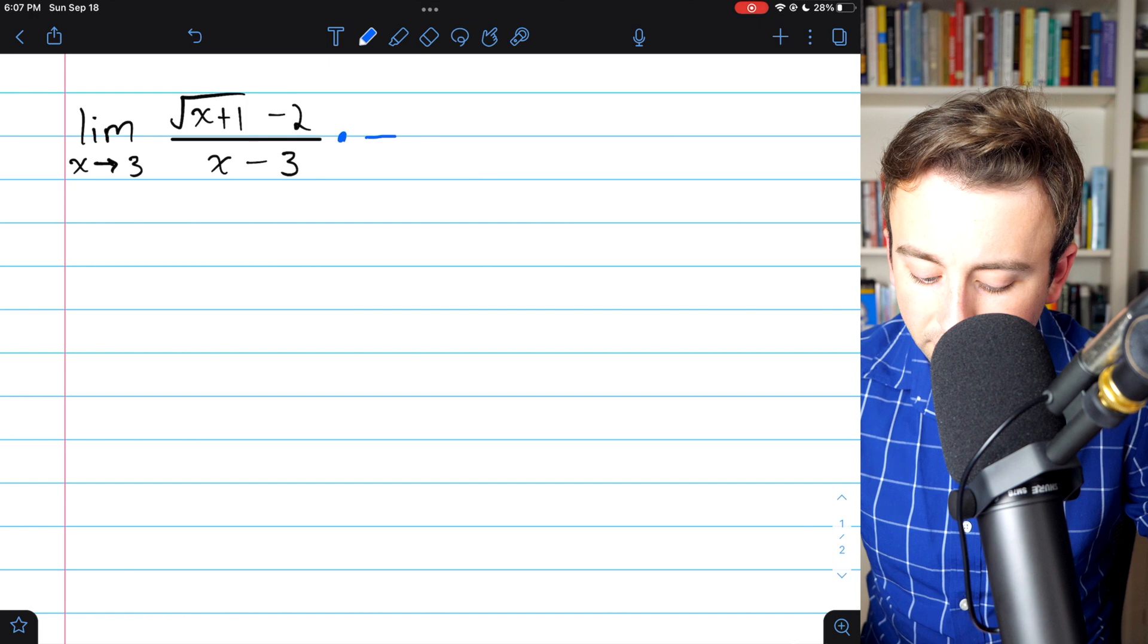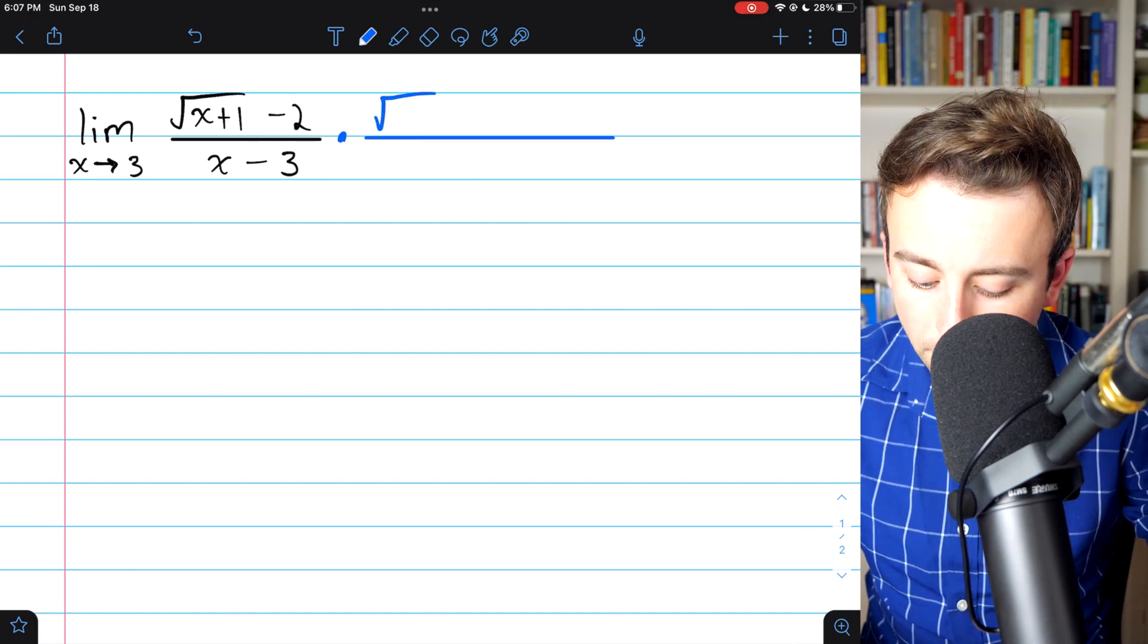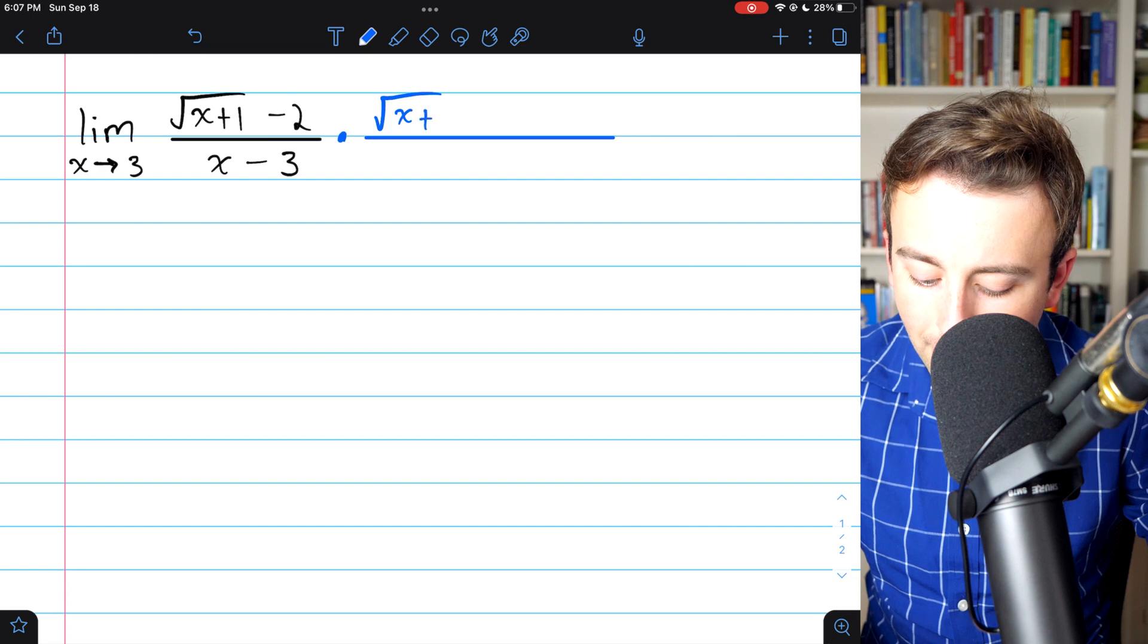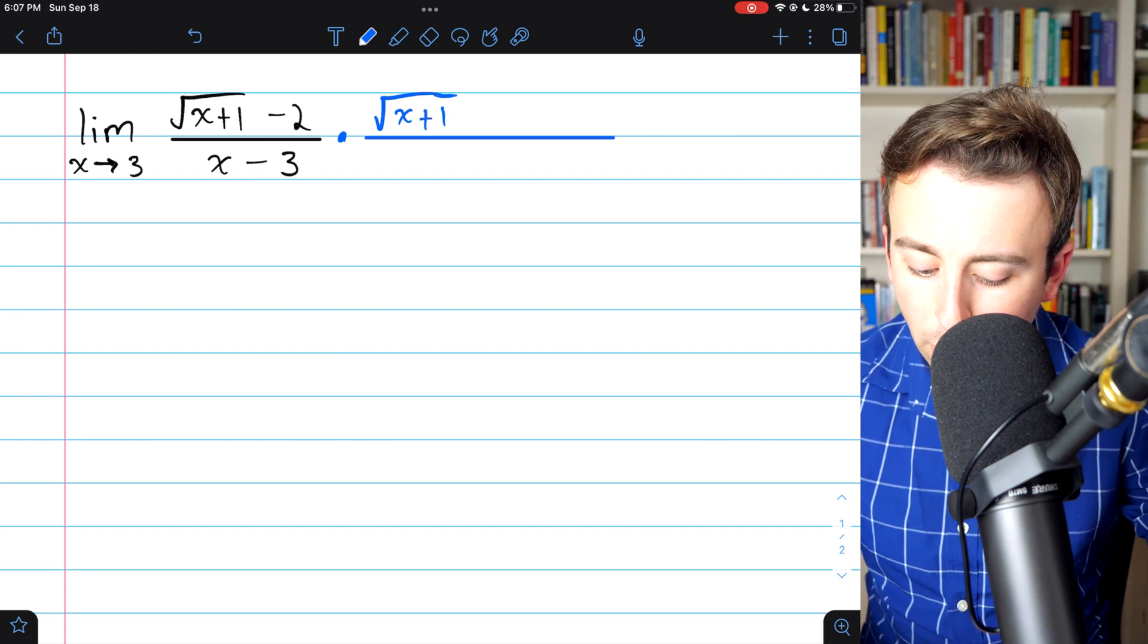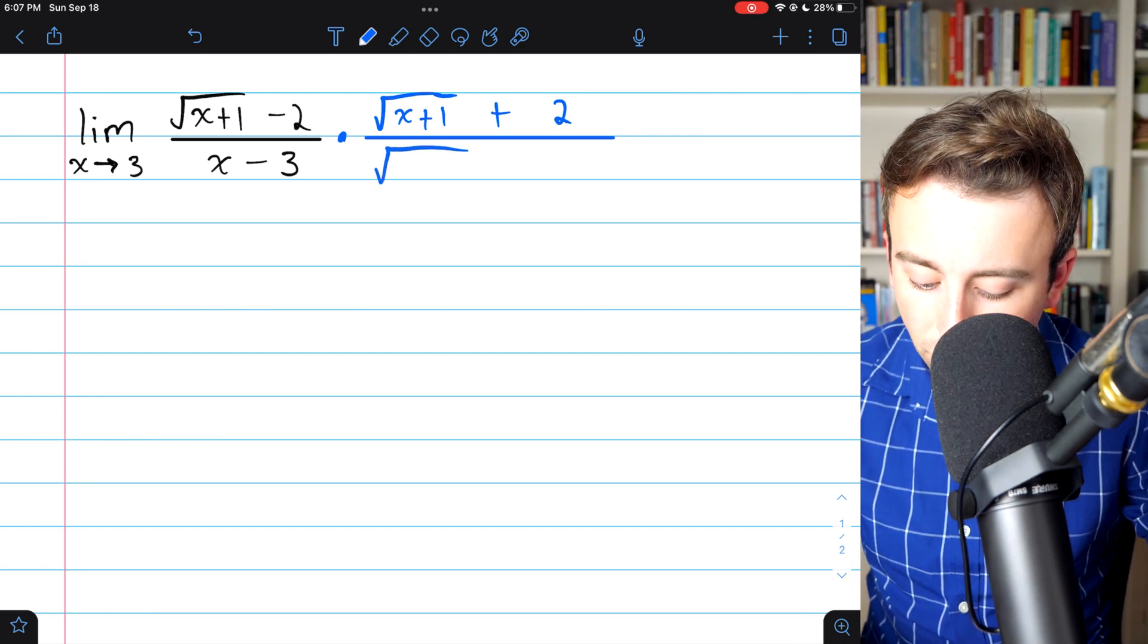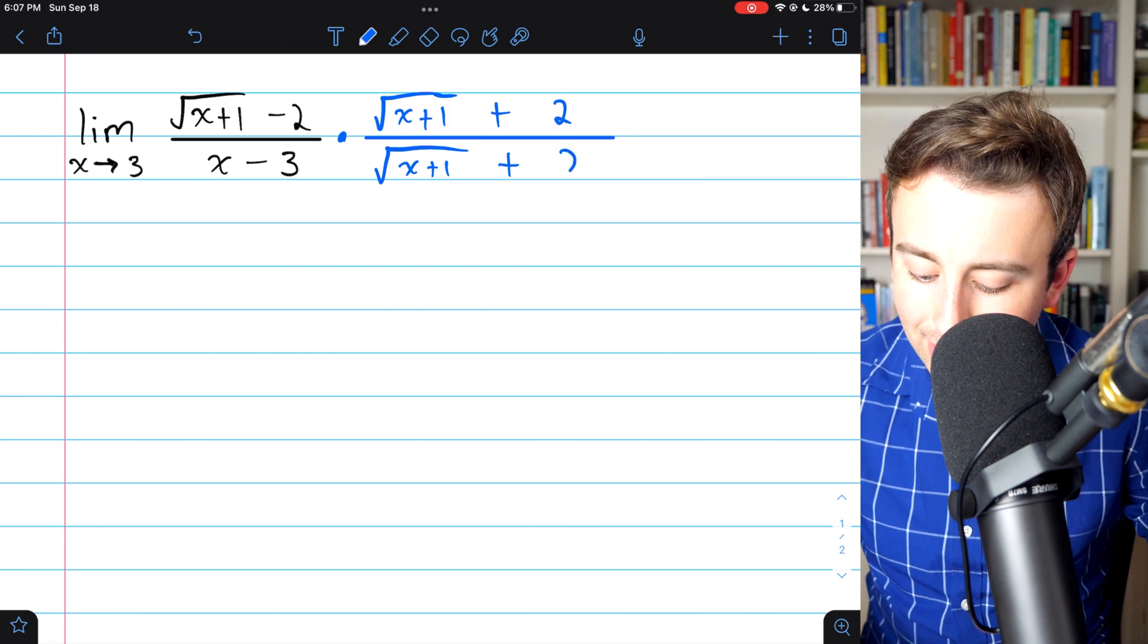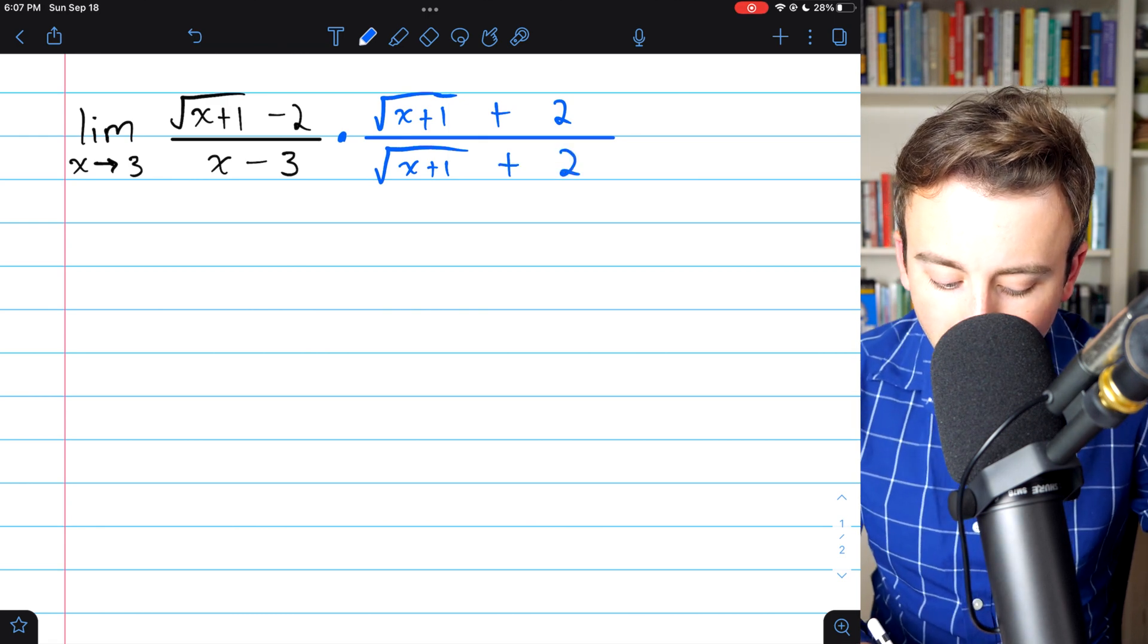Just as before, the first thing we'll need to do as we attempt to rationalize the numerator in this case is multiply by the conjugate. So that's the square root of x plus 1 plus 2. This is really utilizing a difference of squares factorization. So we have to multiply by that in the denominator as well.